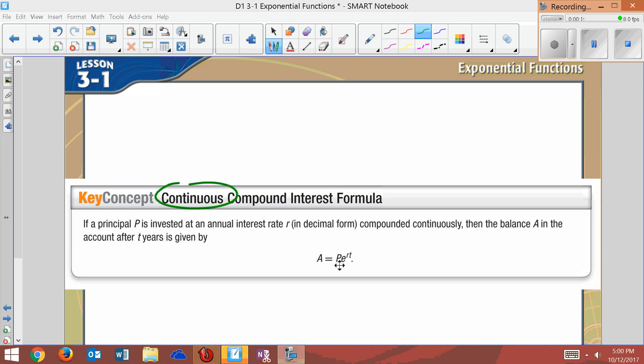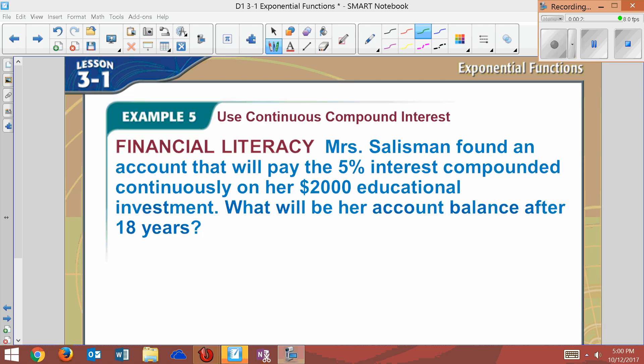As n approaches infinity, what would the rate look like? You can use this formula here: A equals Pe^rt. So now it says the same problem, but this time we want to use the A equals Pe^rt formula.